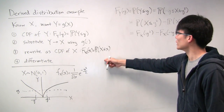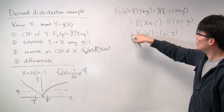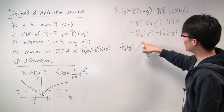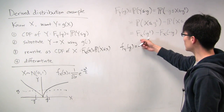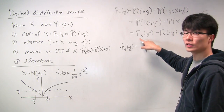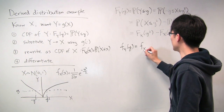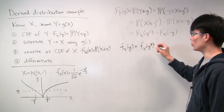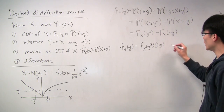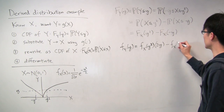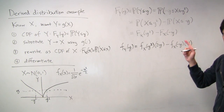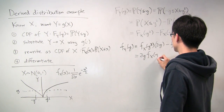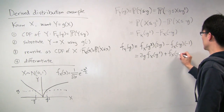Now step four: we differentiate both sides with respect to y. The left side gives us what we want — the PDF of y. On the right side we invoke the chain rule. Differentiating the CDF of x gives the PDF of x, and the chain rule on y squared gives an extra factor of 2y. Similarly, the second term gives the PDF of x evaluated at negative y, with the chain rule contributing a factor of negative 1. Cleaning up: 2y · f_x(y²) + f_x(−y).